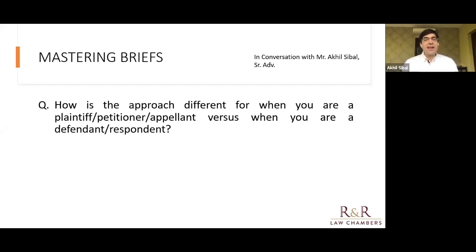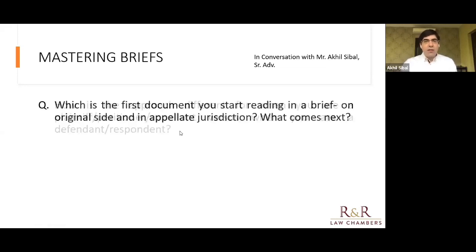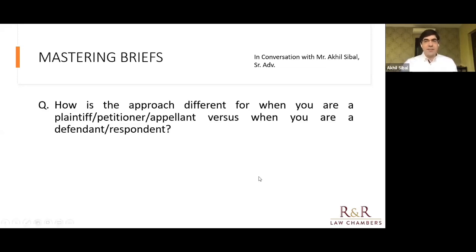In an appeal, the entire record is not placed — usually there's an application for calling for the entire record. But it's possible that as counsel you feel that parts of the record may be required even at the first hearing. One useful guide is the impugned judgment: I would look to see if the material that the impugned judgment refers to is filed with the appeal. This problem arises frequently with Section 34 petitions, where the challenge is to an arbitral award. The arbitral record tends to be heavy, and most people don't file the entire record — they're racing against time, there's a strict limitation.